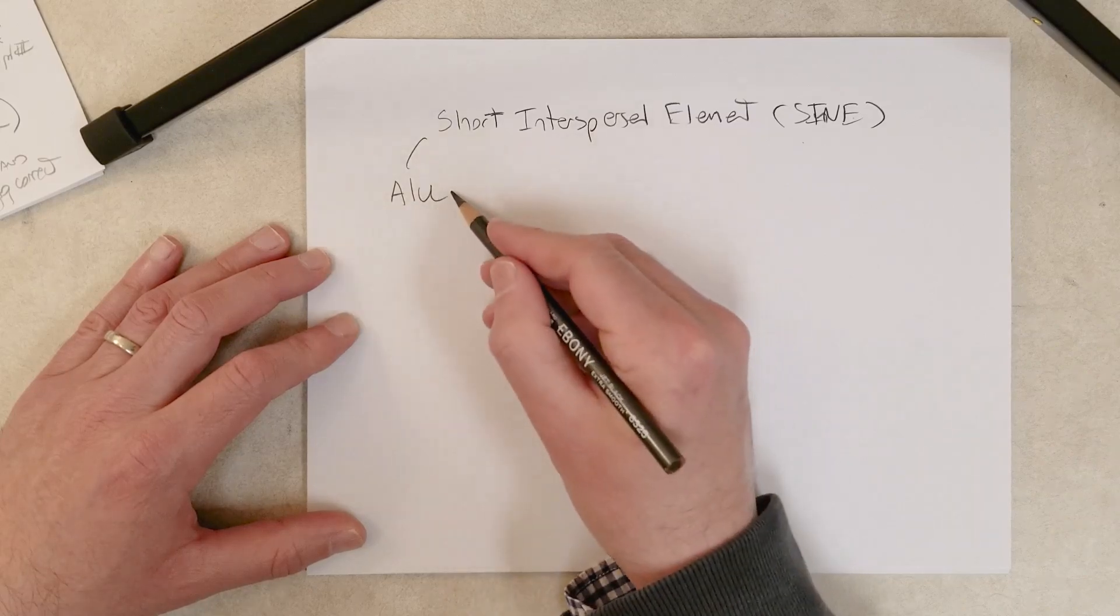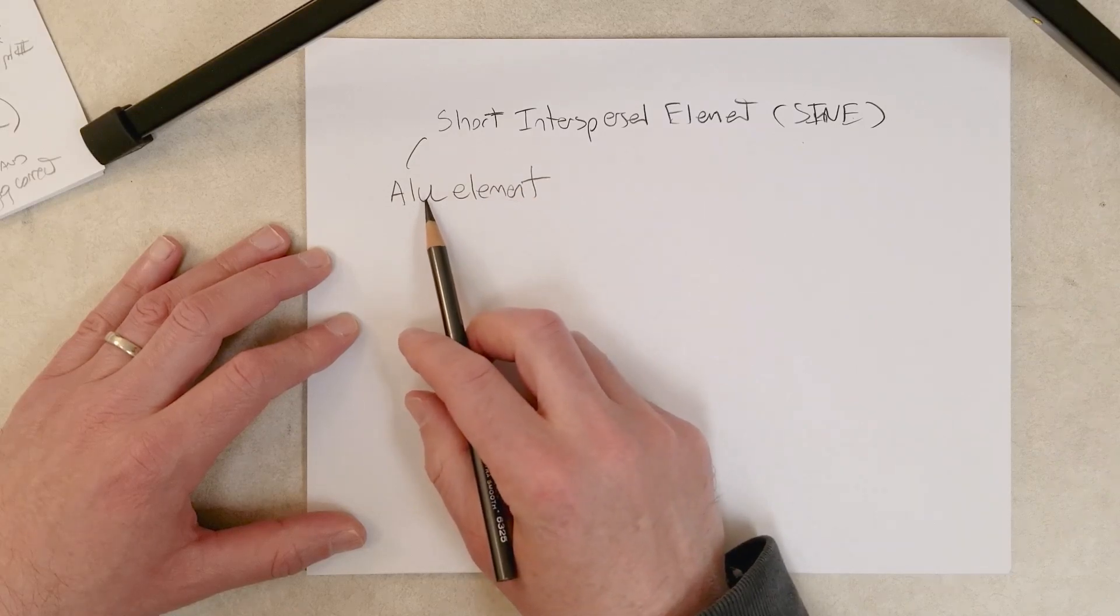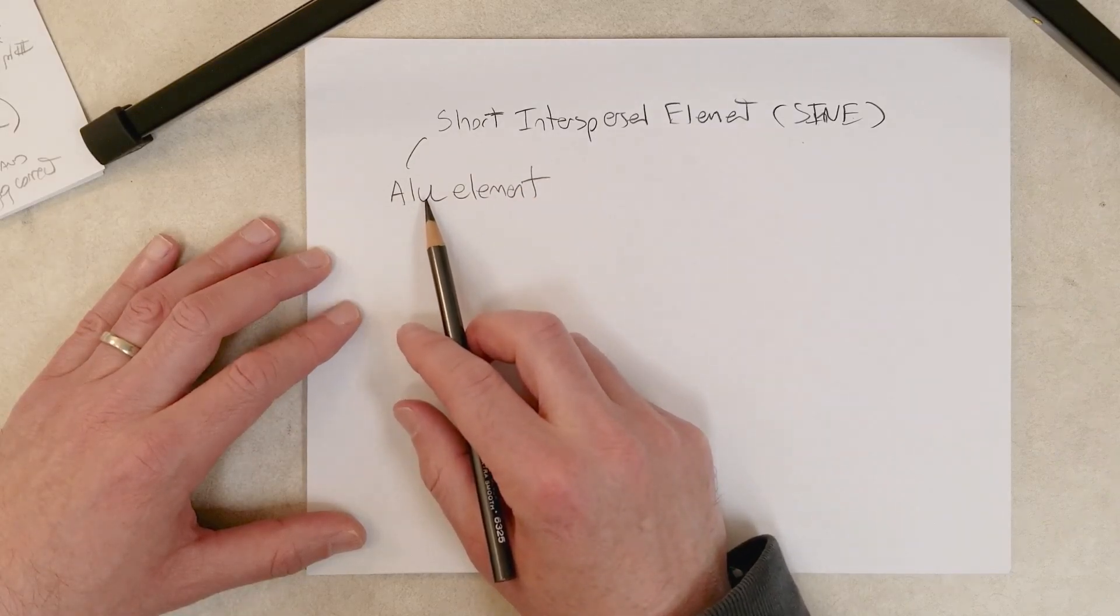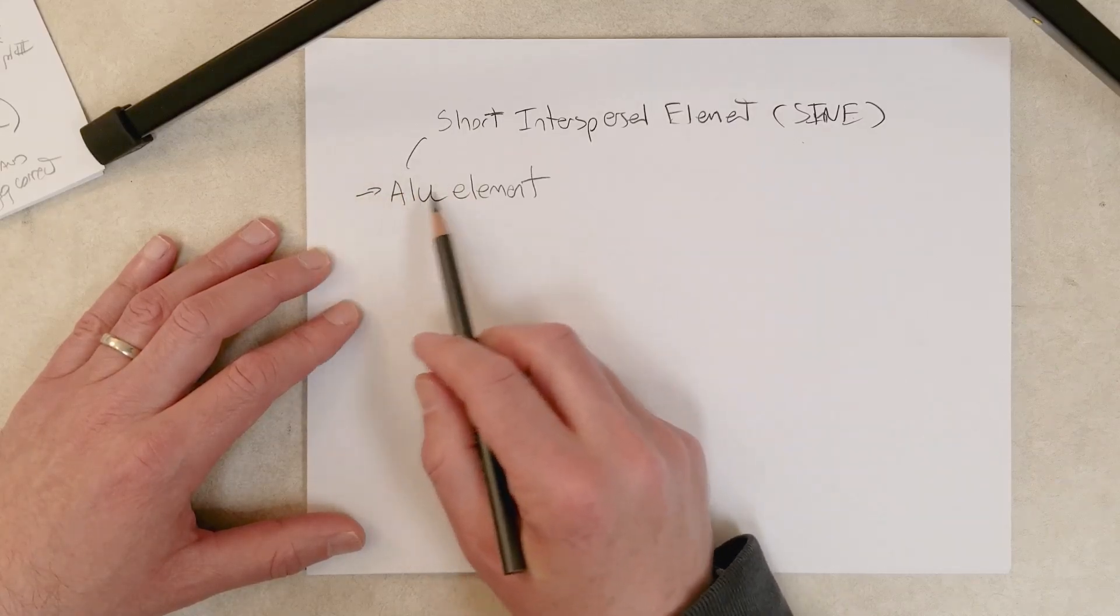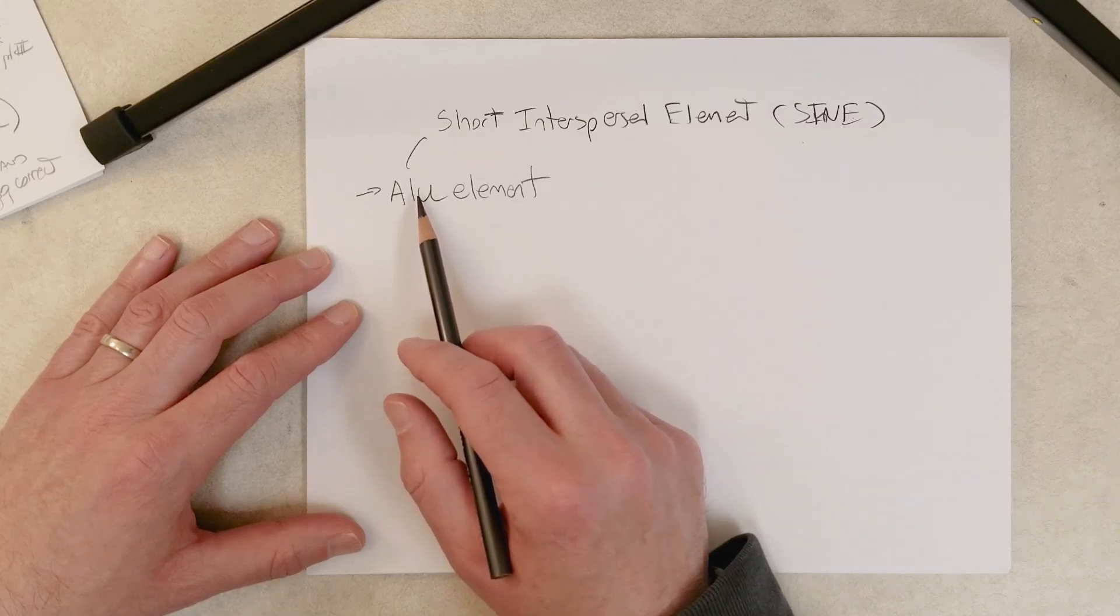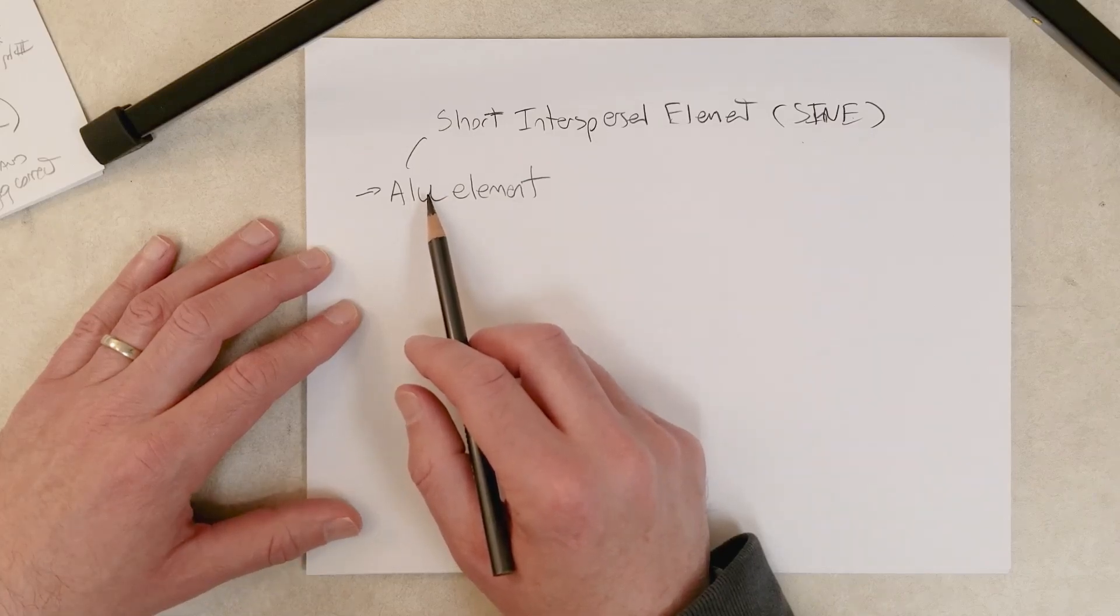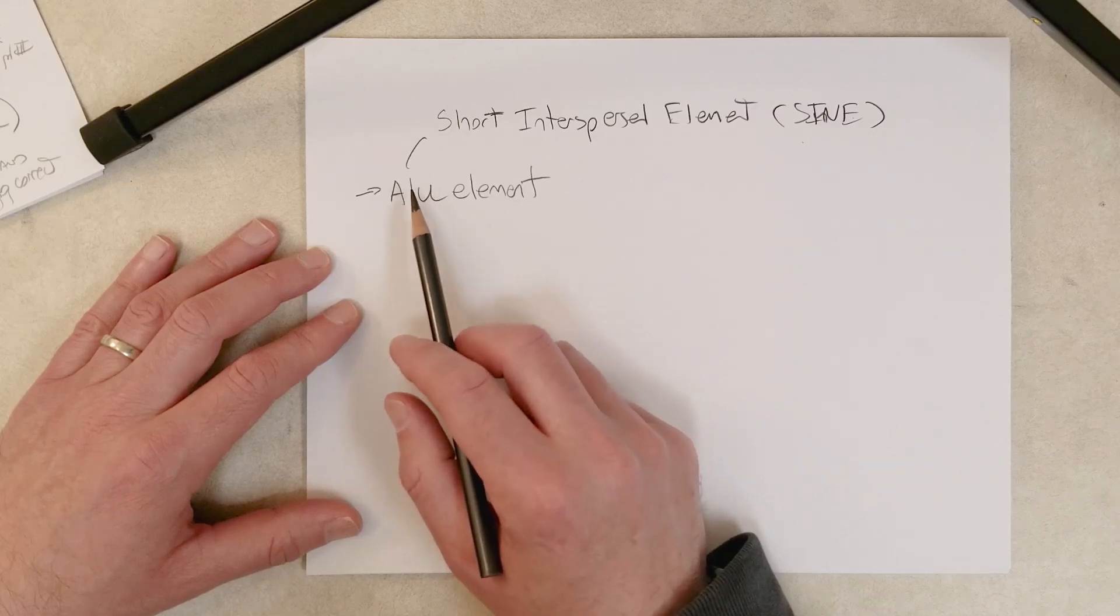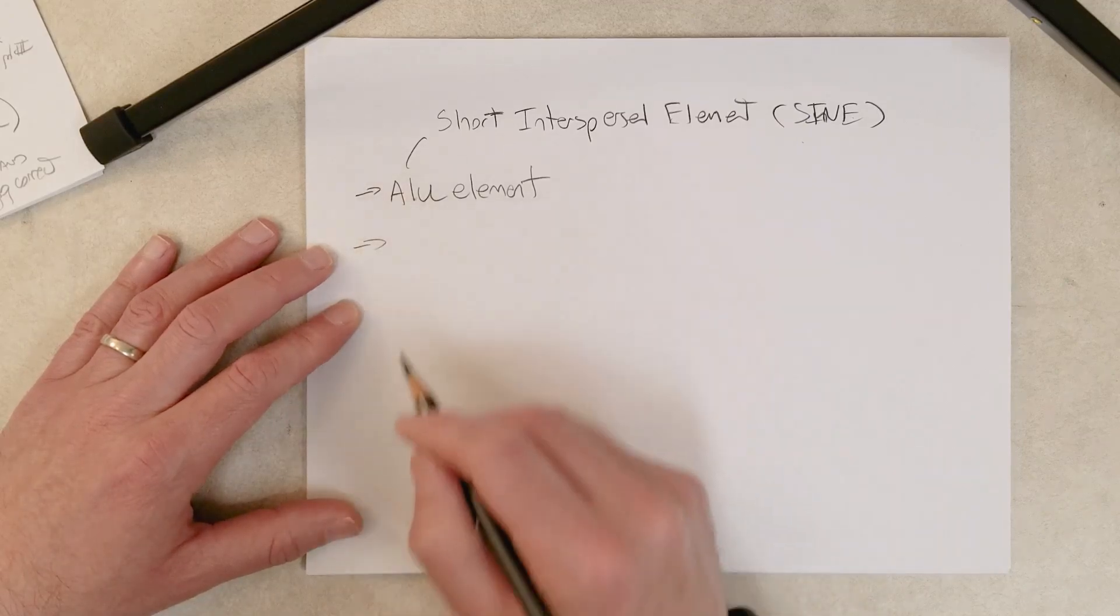The ALU element gets its name from a restriction endonuclease called ALU, and we are going to cover restriction endonucleases in the next video. When you digest the human genome with a restriction endonuclease like ALU, you get a bunch of fragments about 300 base pairs long. That's where the name comes from. More on that in the next lecture.